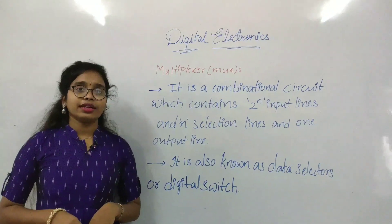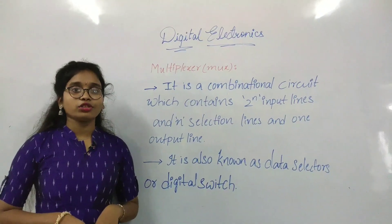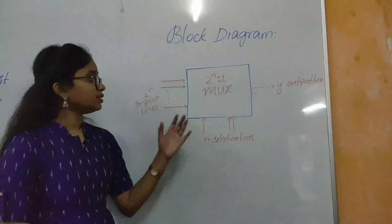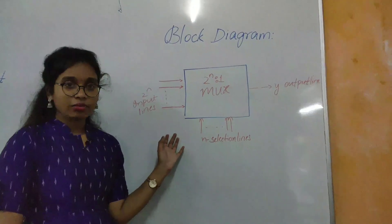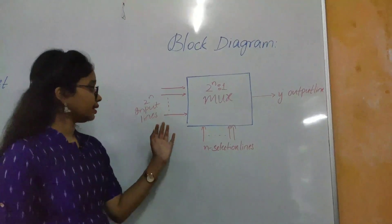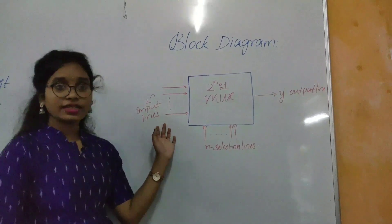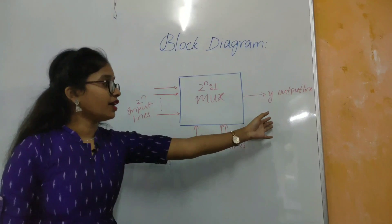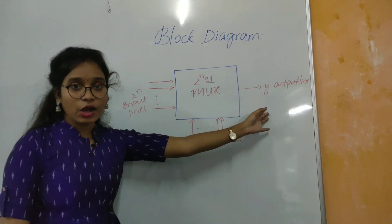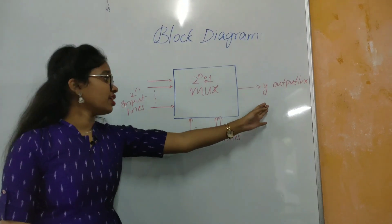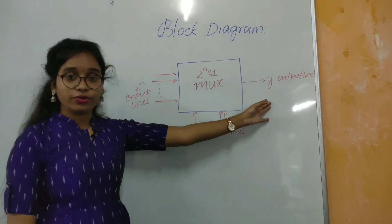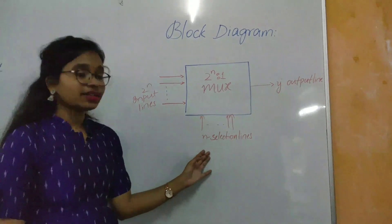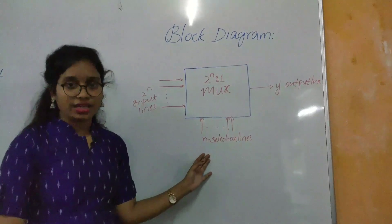Now let us see the block diagram of multiplexer. It contains two-power-N input lines and one single output line, which is indicated by Y, and these are the N selection lines.